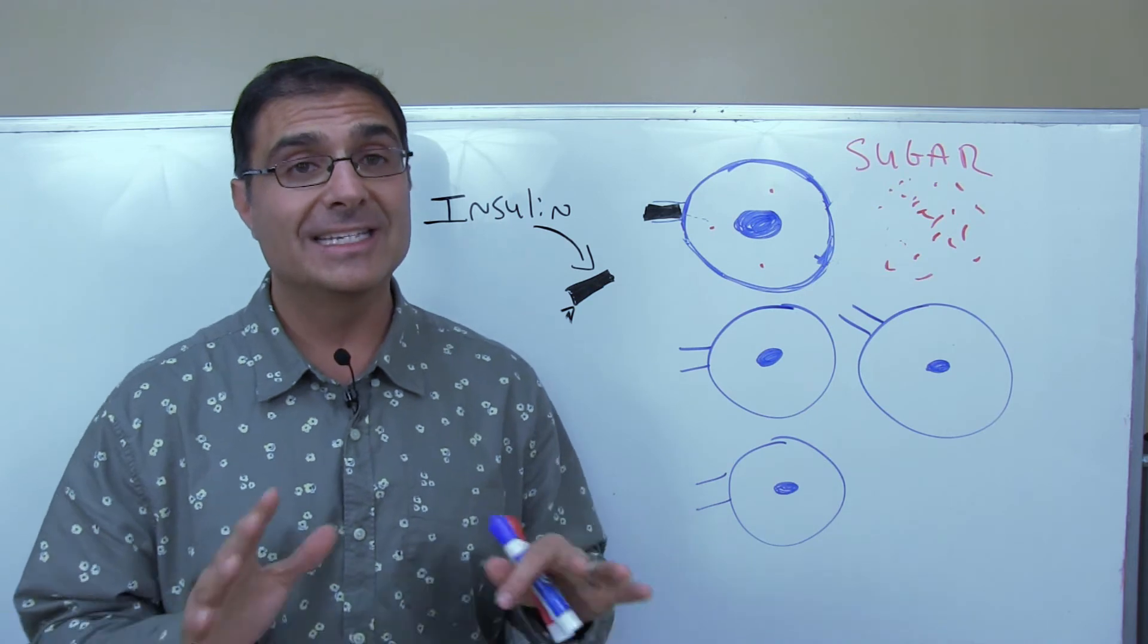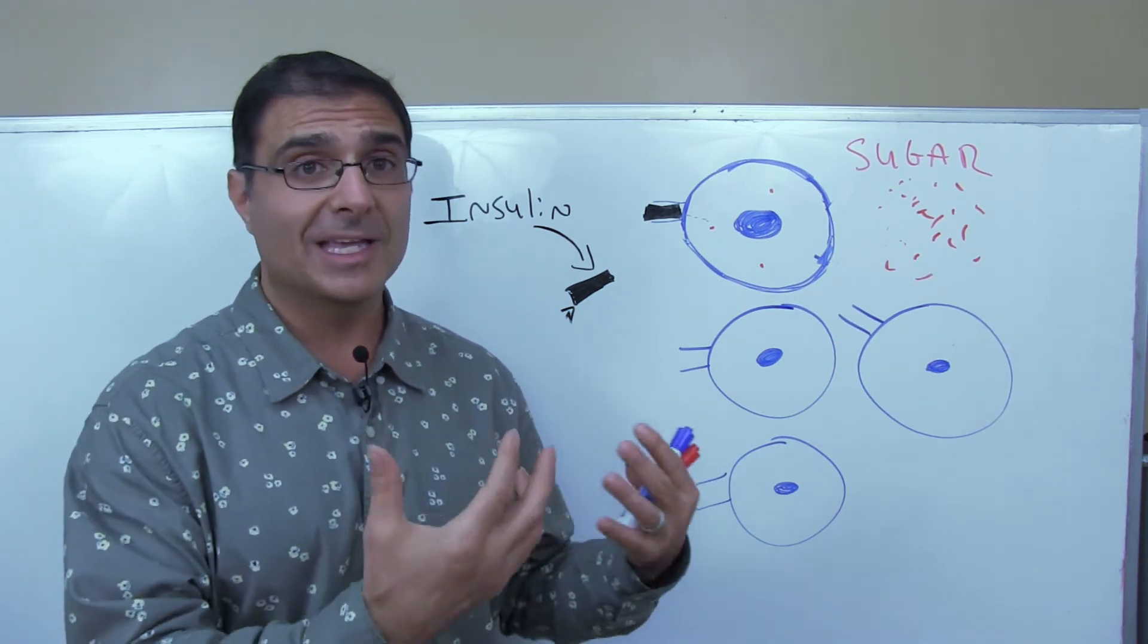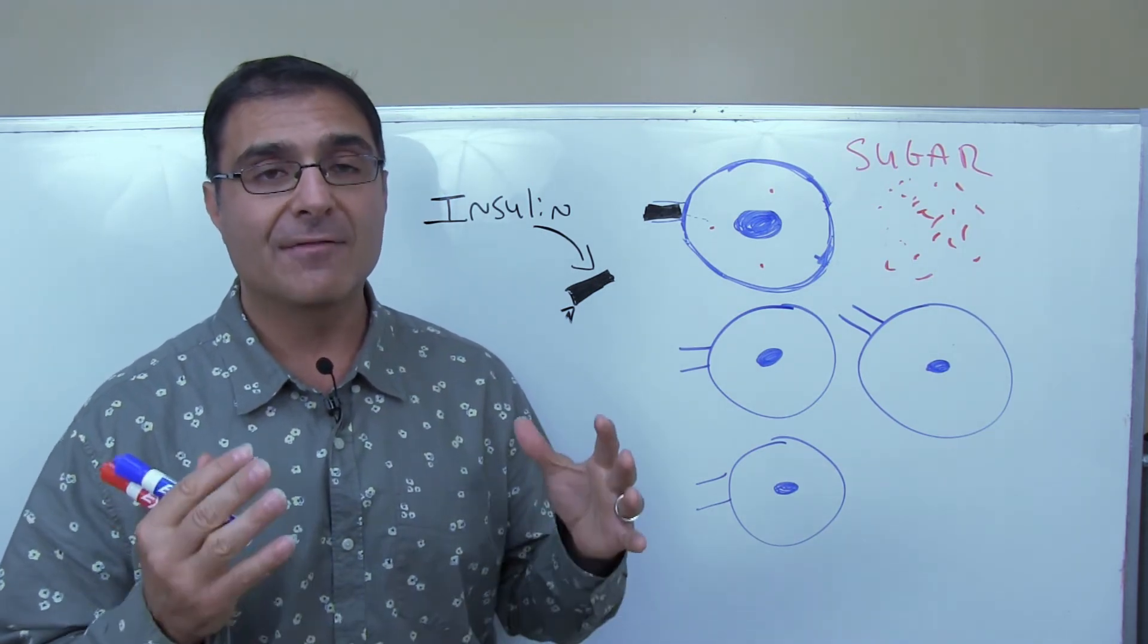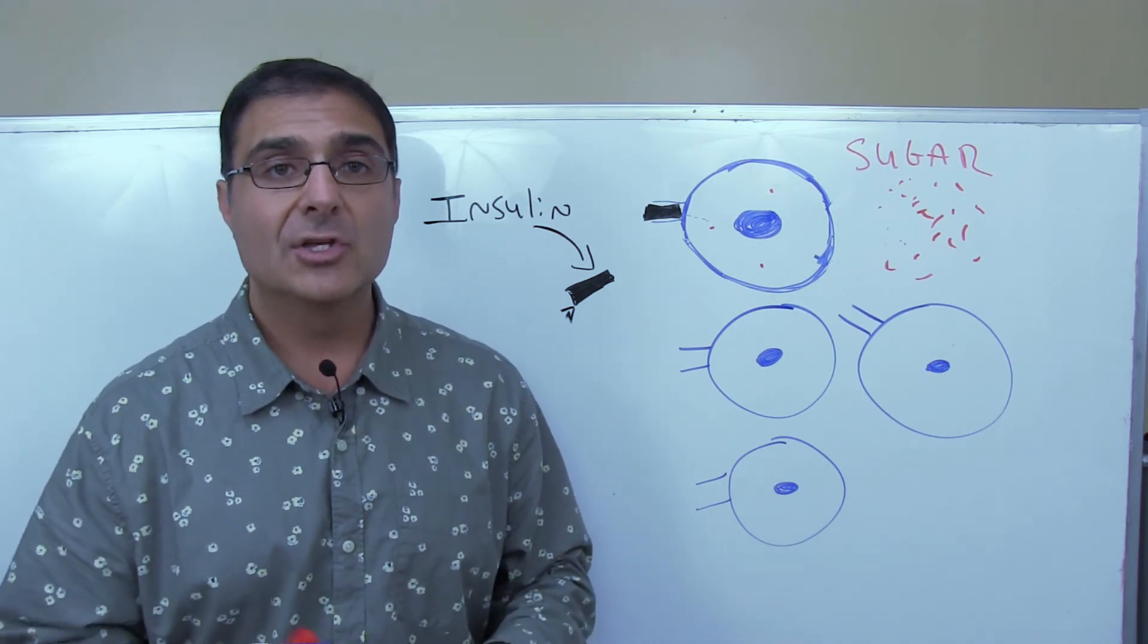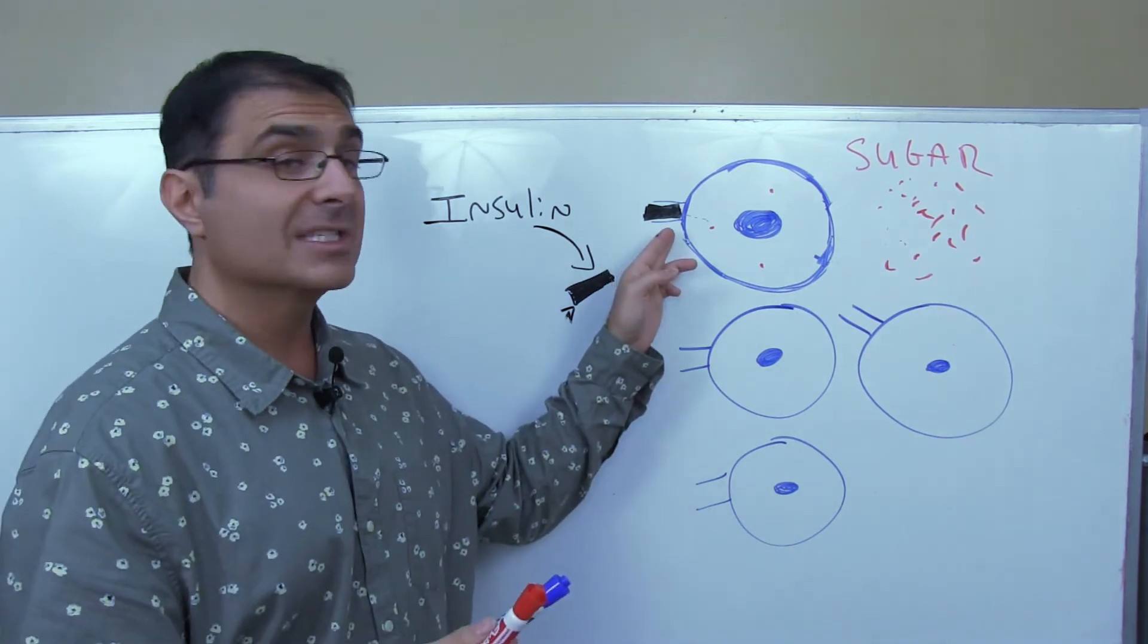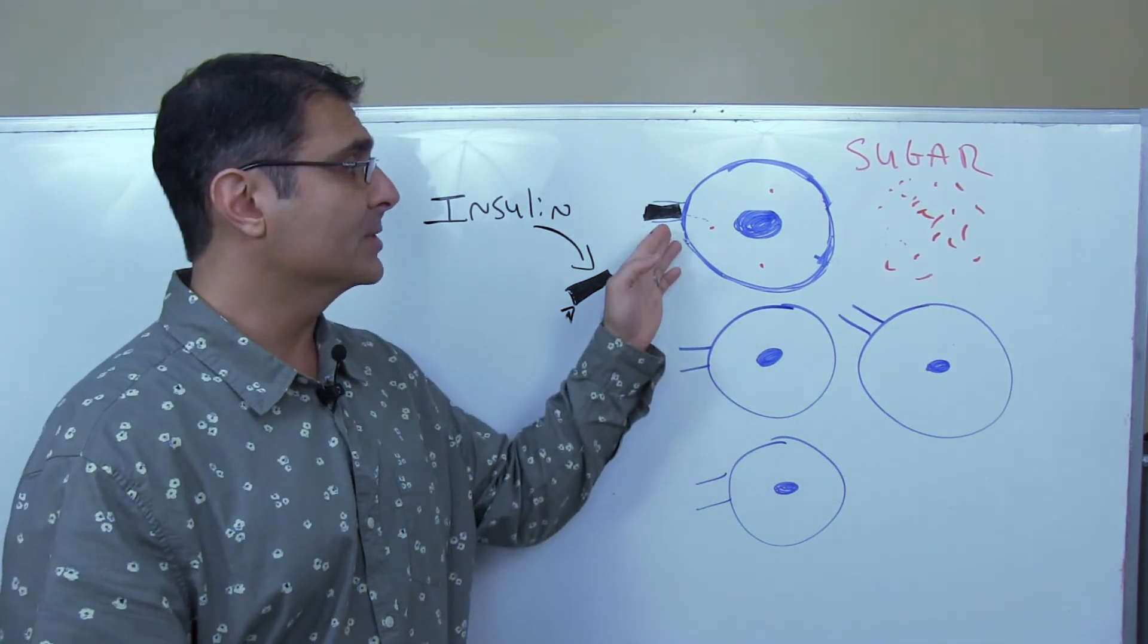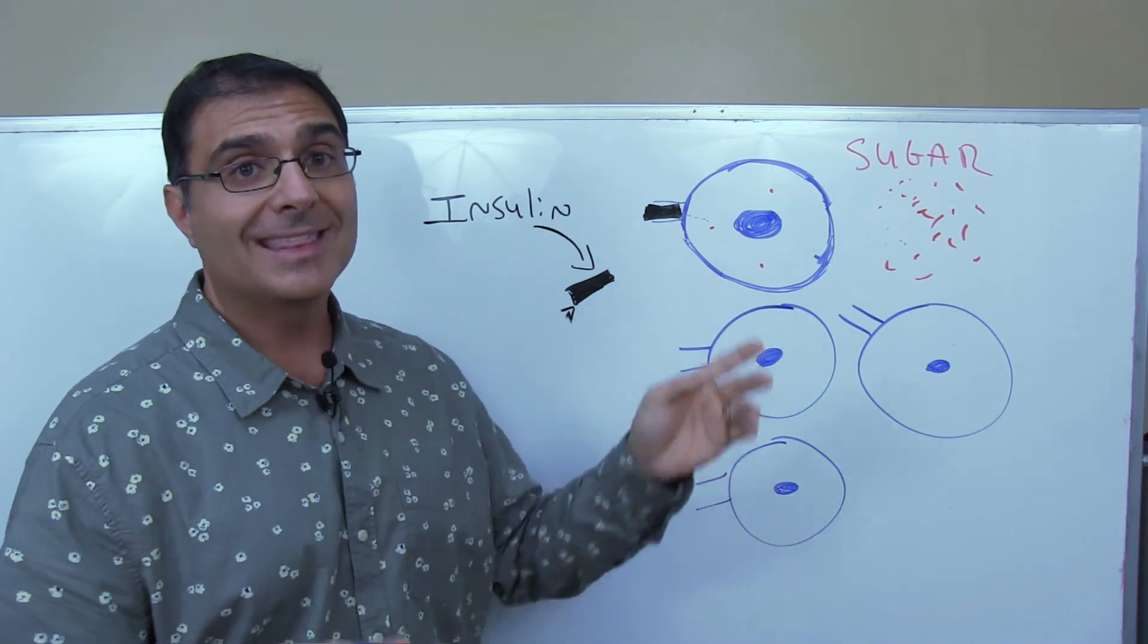And one of the issues with that is insulin is the most powerful fat storing hormone in your body. So when your body's making plenty of insulin, and now you're injecting even more insulin in your own body, now you're really creating a very, very fat storing type of situation in the body. So the key is to do the correct dietary changes to change the sensitivity of these receptors, right?